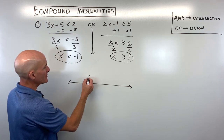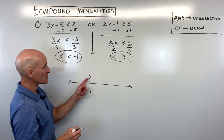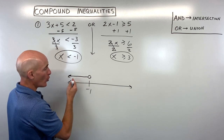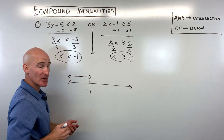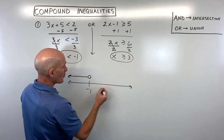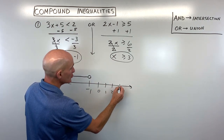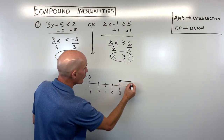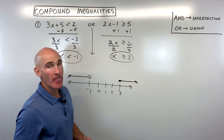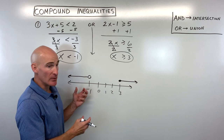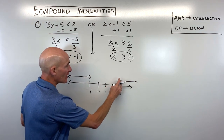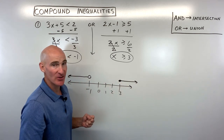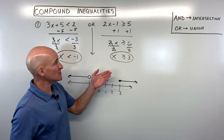Less than negative 1 doesn't include negative 1, so we draw an open circle. Less than means we go to the left, where numbers get smaller. For the second inequality, x is greater than or equal to 3 — we draw a closed circle at 3 and go to the right. Since this is 'or' (union), it's all of these values combined. The solution is everything we've graphed.